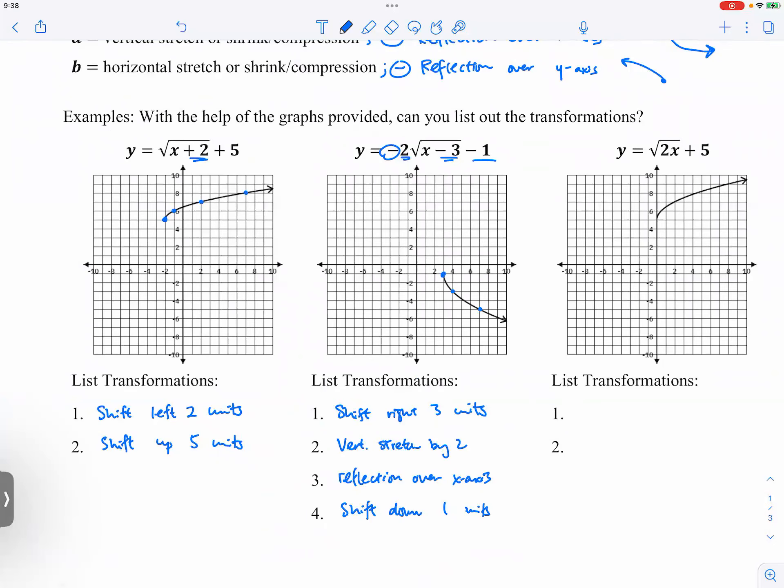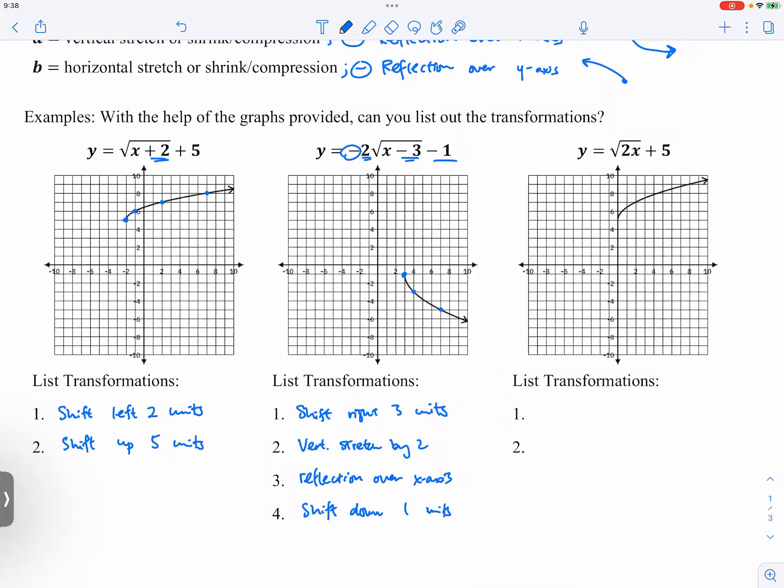So make sure you can see. The standard is this: if you cover the graph and the transformations, if you just stare at the equation, would you be able to write down the transformations? Would you be able to picture the graph if you just stare at the equation?